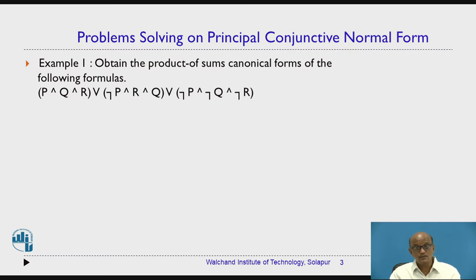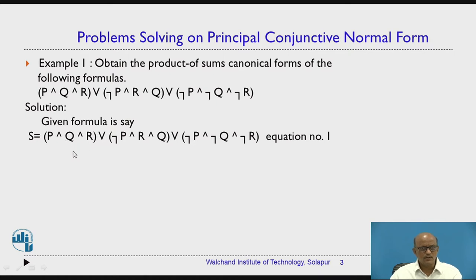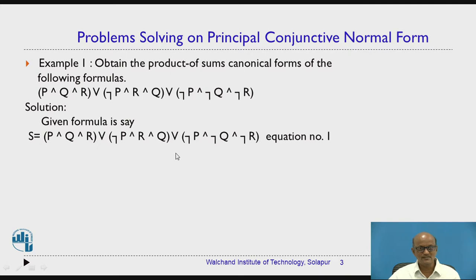Product of sums canonical form is also nothing but principal conjunctive normal form. Now, if you observe the given formula — let us name it S, equation number 1 — it is a summation of three terms. Inside each bracket, it is a product of variables with negation. This means there are minterms, and the minterms are taken in summation. So the given formula is in the form of PDNF.